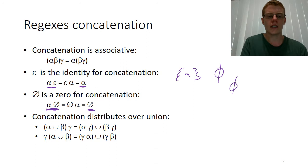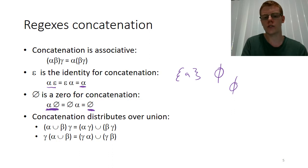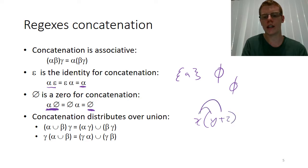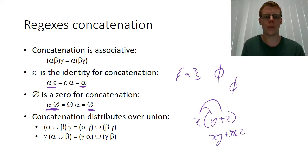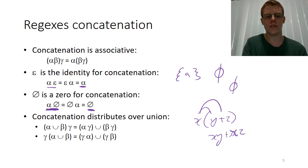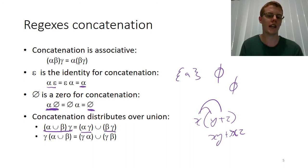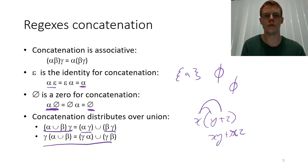Concatenation distributes over union, just like multiplication distributes over addition. When you had x multiplied by y plus z, you could multiply x with y and x with z to get xy plus xz. This same approach applies to concatenation and union — so alpha union beta, all concatenated with gamma, is the same as alpha concatenated with gamma, union beta concatenated with gamma. And because concatenation is associative, the order doesn't matter.